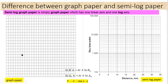First, let's look at the similarity between the simple conventional graph paper and the semi-log graph paper. On the x-axis of the conventional graph paper, all the intervals are at a regular distance from one another — each small division is equally spaced. Similarly, the x-axis of the semi-log graph paper also has intervals at a regular distance from one another. This is the similarity between these two graphs.